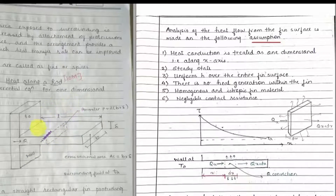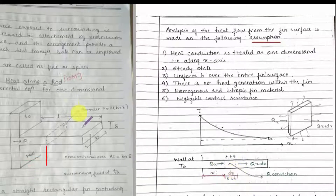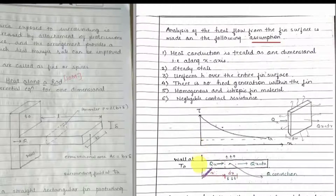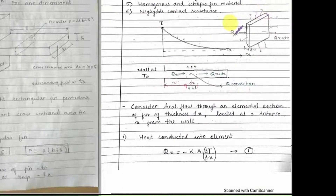Now consider this dotted portion — I have considered this as a small elemental section of the fin. Let it be at a distance x from the wall, and let the length of this element be dx. This is the one-dimensional view of the fin. The heat entering is qx, some heat will go out as qx+dx, and some heat is lost from the area exposed to convection, as shown with the arrows. Here you can find the zoomed view of this section.